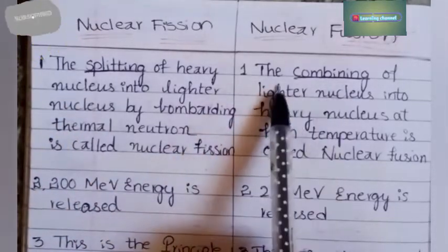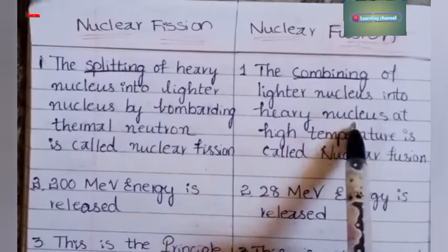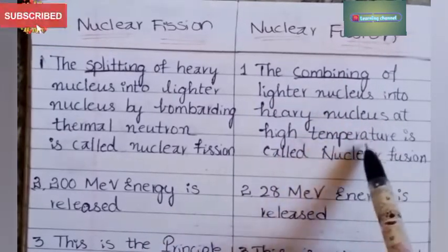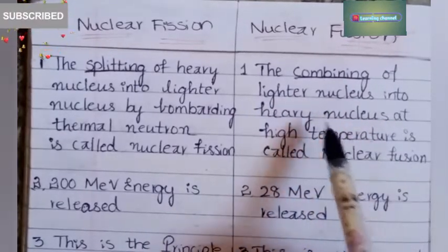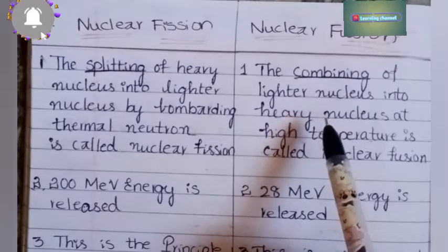Nuclear fusion is the combining of lighter nuclei into a heavy nucleus at high temperature. So at high temperature, lighter nuclei combine to form a heavy nucleus.